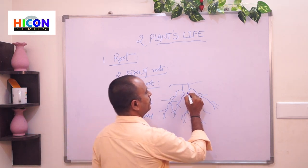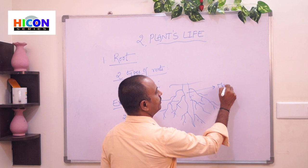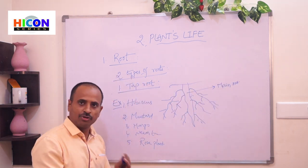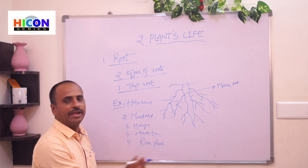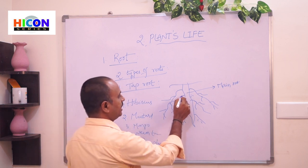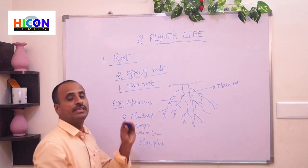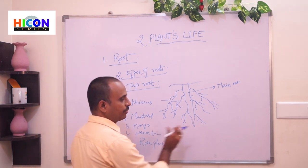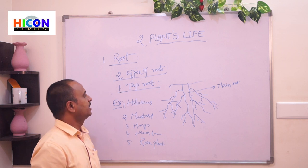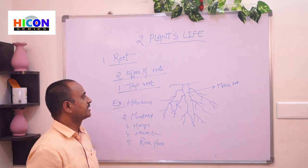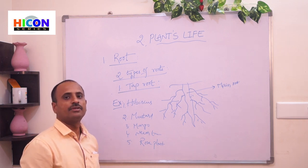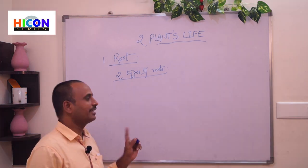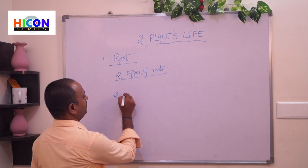In tap root, there is a main root in the middle and some thin roots grow from it, just like branches above a tree. This type of root is called tap root. Next we will discuss the second type of root — fibrous root.